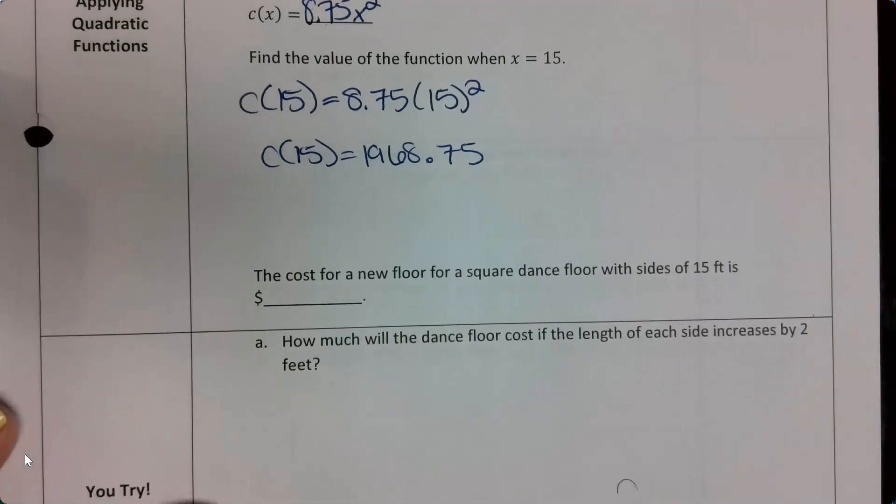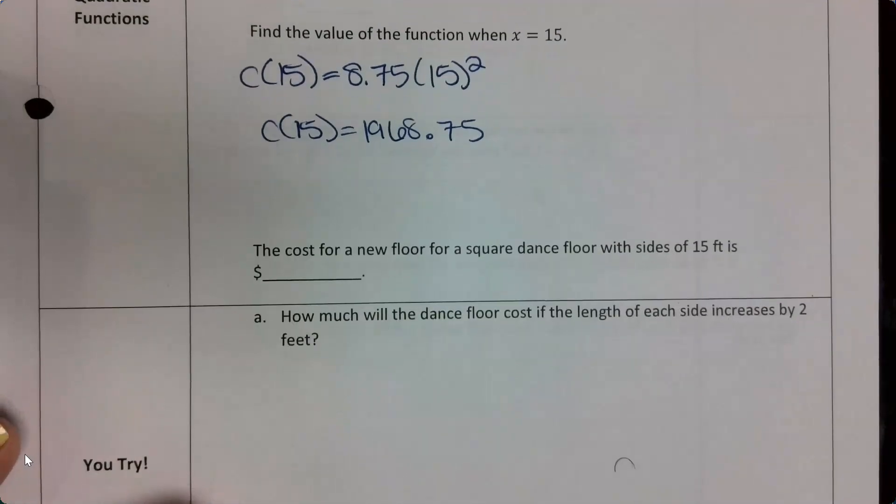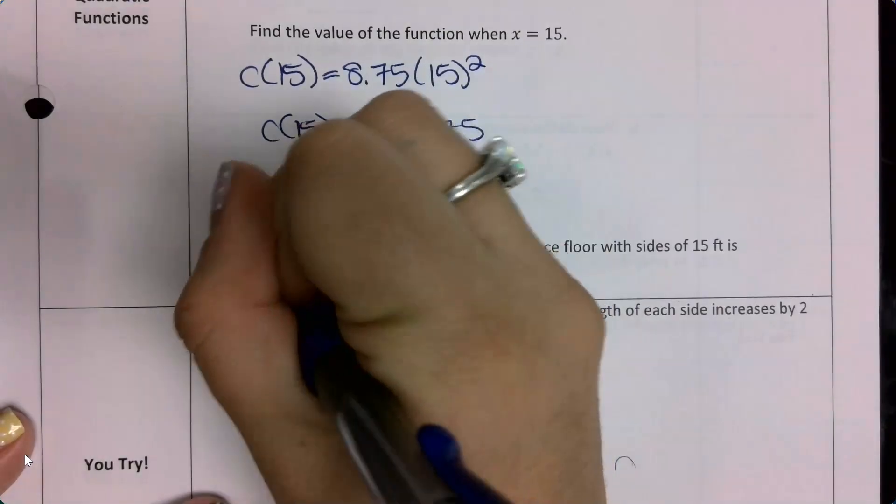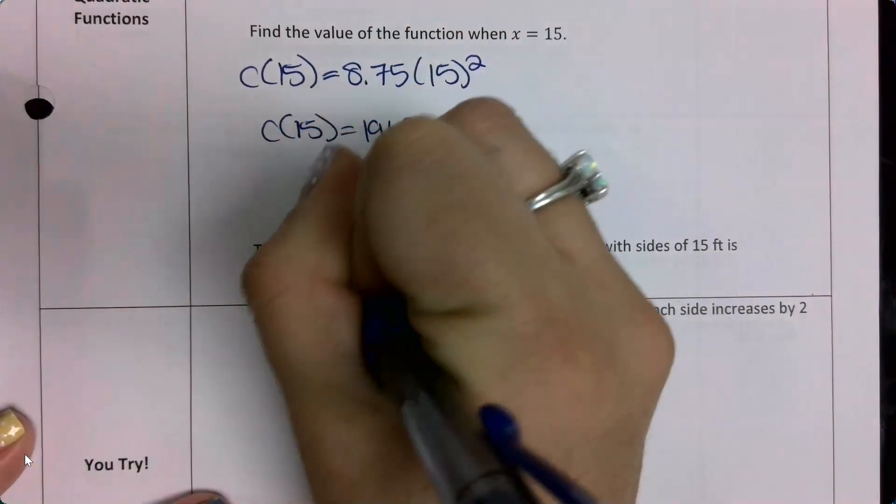So then I just need to go ahead and interpret this. The cost for a new floor for a square dance floor with sides of 15 feet is $1,968.75.